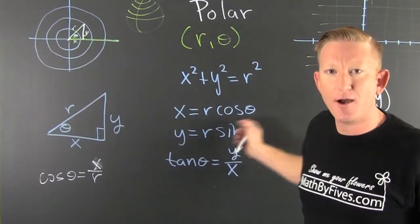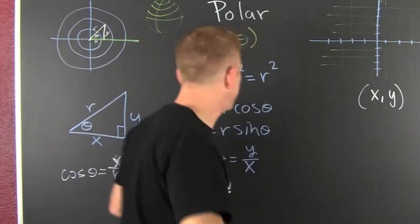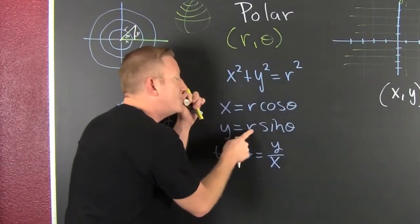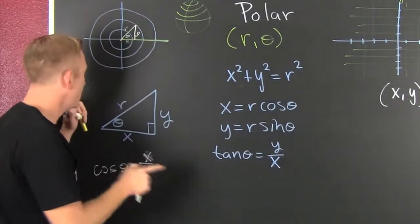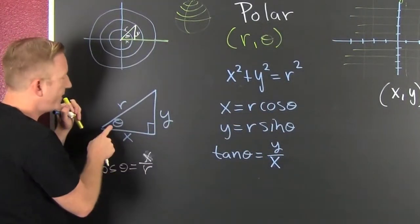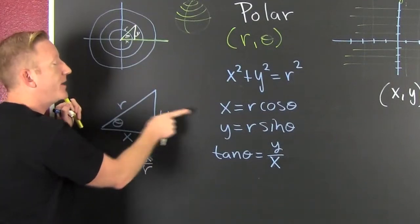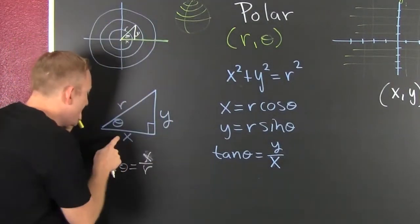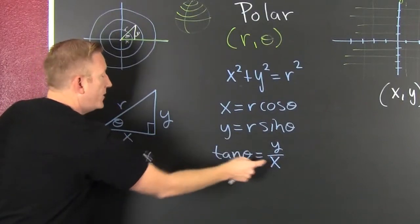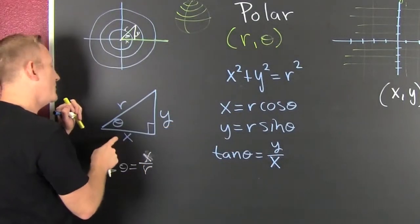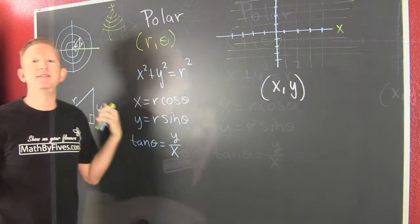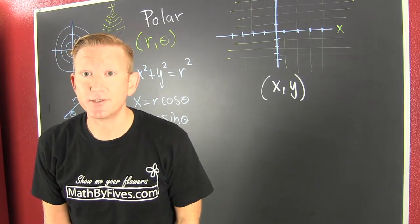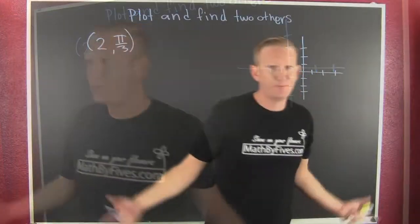Now we're going here: y is equal to r sine theta, because the sine of theta is the opposite over the hypotenuse. Same trick. The tangent is y over x, opposite over adjacent.